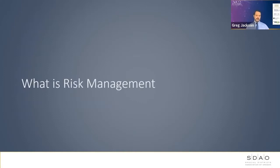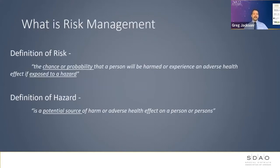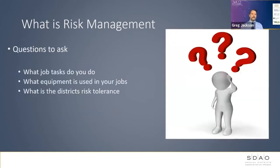First, let's look at a couple of definitions. Let's define risk and hazard. By understanding these definitions, it will give us reasons as to why we implement the policies and procedures that we do. The definition of risk is the chance or probability that a person will be harmed or experience an adverse health effect if exposed to a hazard. The definition of hazard is a potential source of harm or adverse health effect on a person or persons.